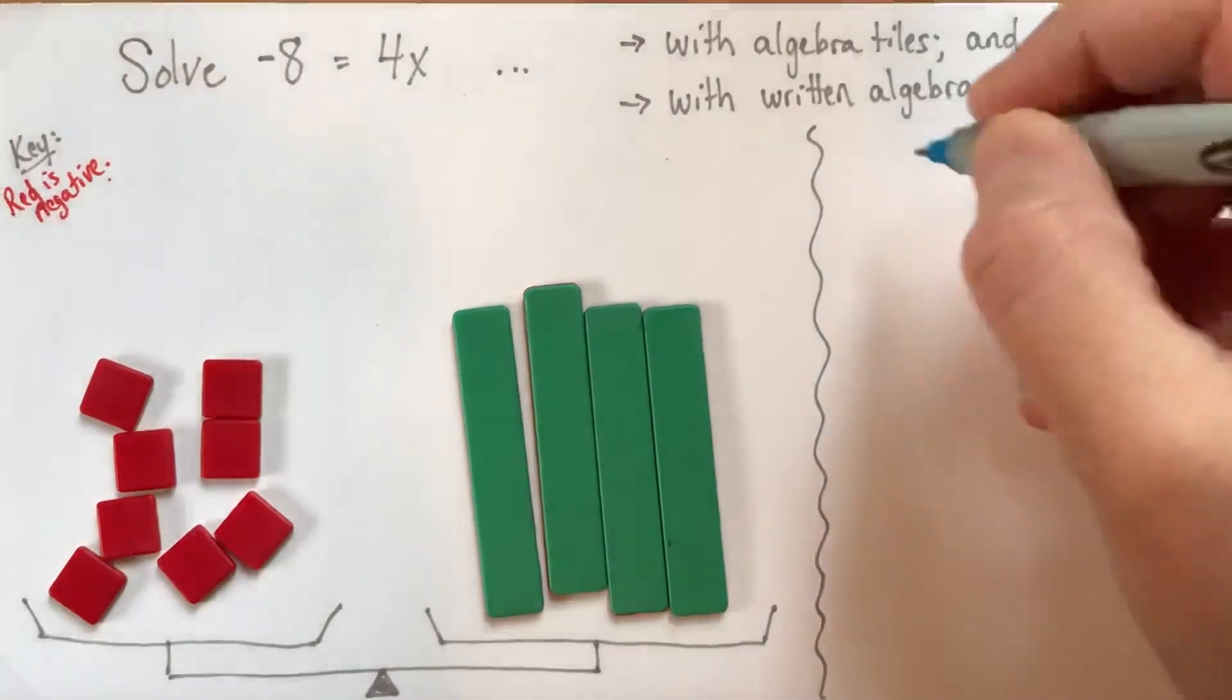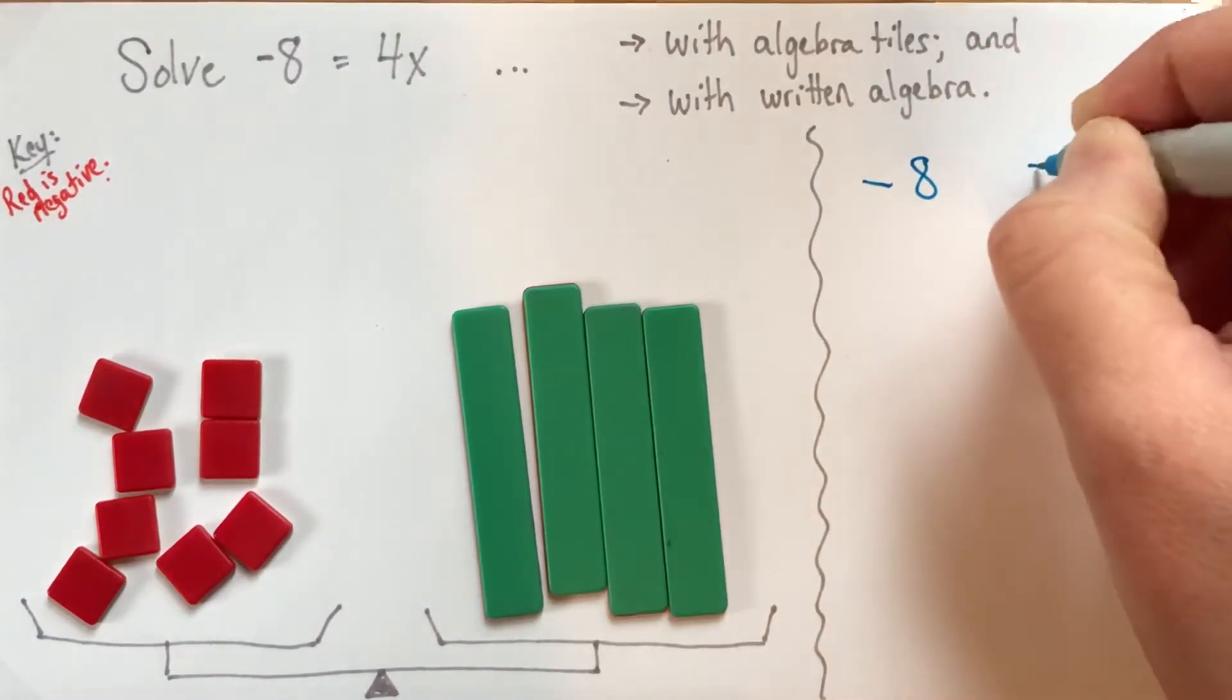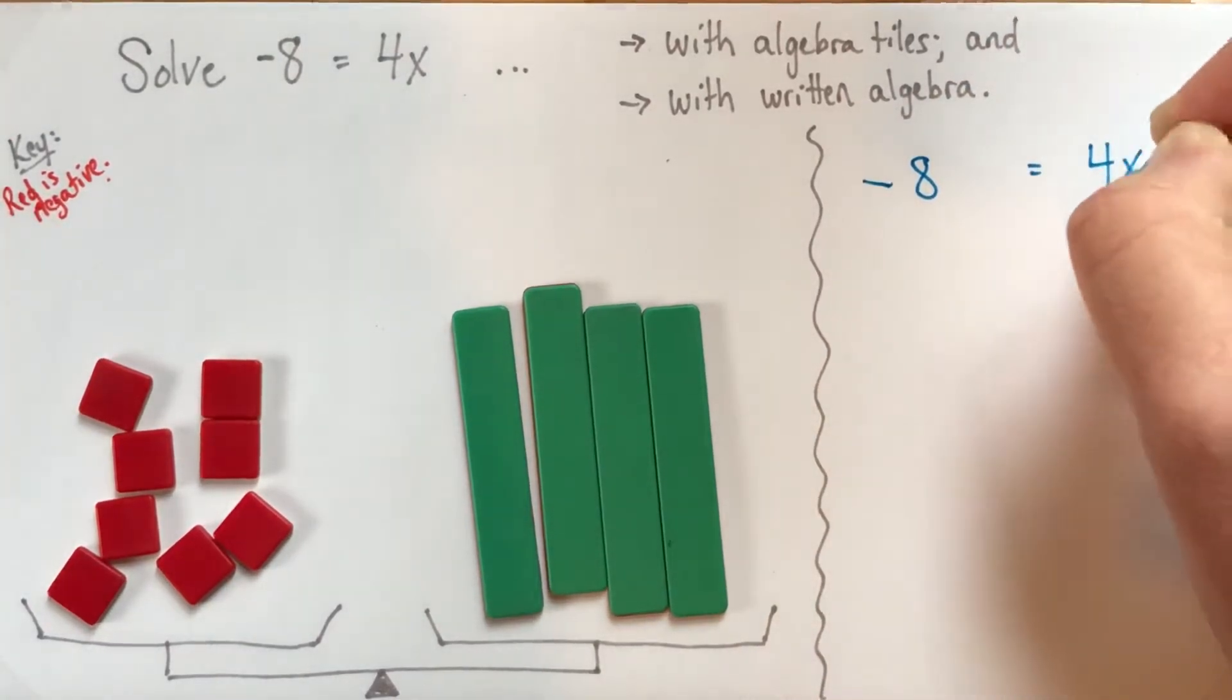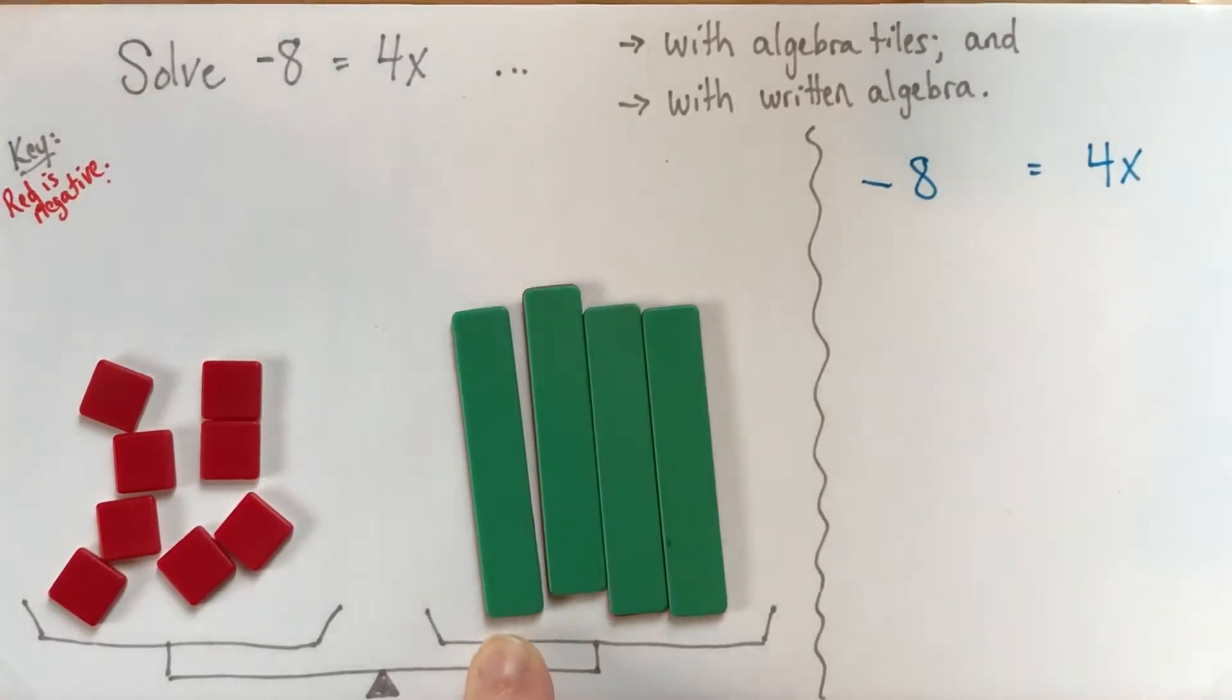So when I'm writing my algebra, first thing I'll do is I'll just copy exactly the same equation. Negative 8 equals 4x. Alright, so our goal is to figure out what the value of 1x is, or one of the variables.